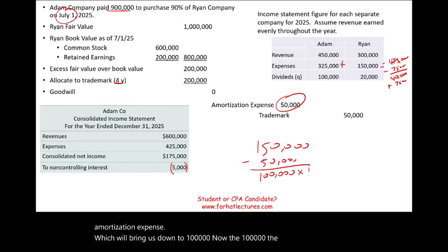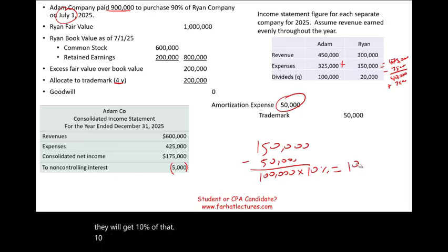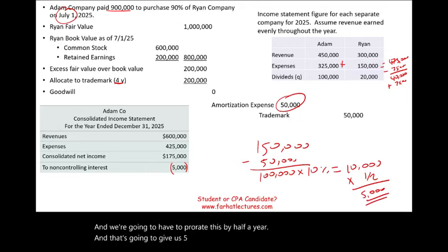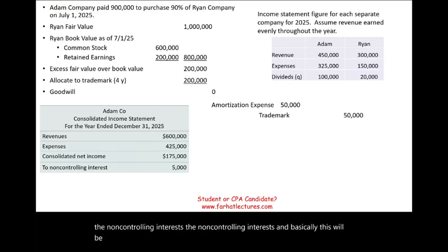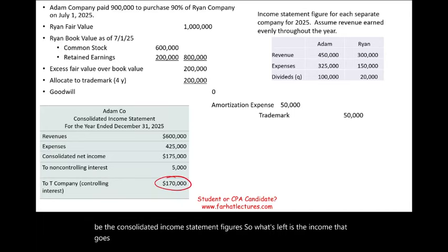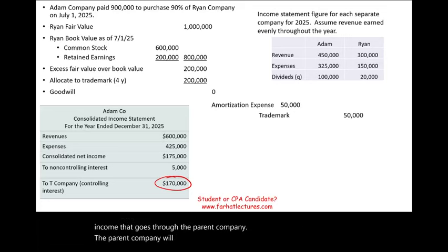Now let's compute the non-controlling interest. The minority shareholders hold 10%. In the second half of the year, Ryan earned $150,000 in revenues minus $75,000 in expenses, giving $75,000 net. Then $300,000 minus $150,000 equals $150,000, less $50,000 amortization expense equals $100,000. The minority shareholders get 10% of $100,000, which is $10,000, prorated for the half year — that's $5,000. We deduct $5,000 for the non-controlling interest. The income attributable to the controlling interest (parent company) is $170,000.